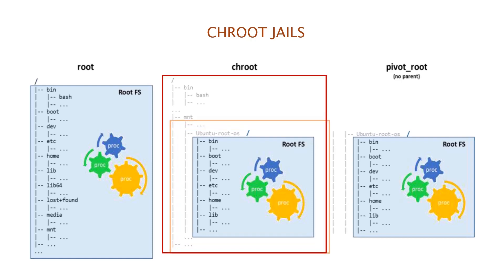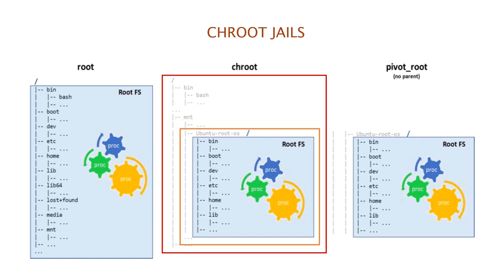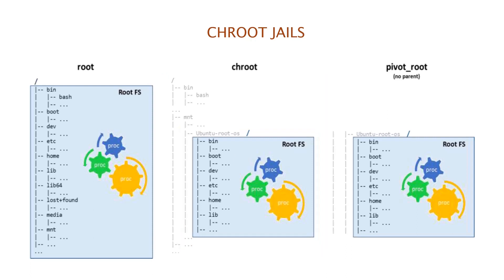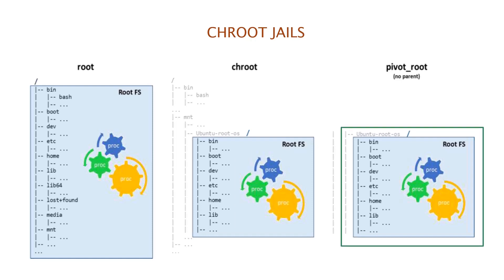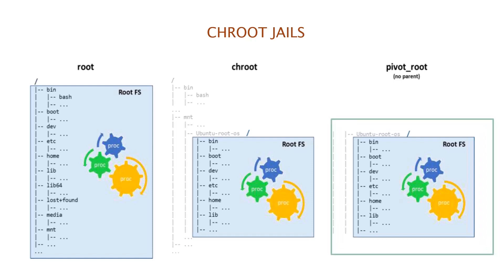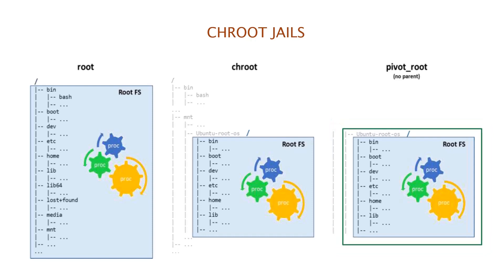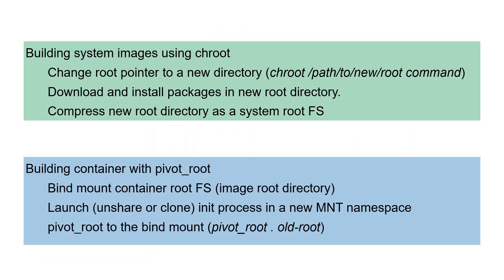The chroot system call creates a new process and points the process file system root to a new directory. In this example, you can notice that chroot points the root to the sub-directory Ubuntu root OS, but the new root is not detached from the actual root file system. Since it is just a root pointer change, a process can outsmart the chroot system call and escape the jail. Jails in Linux can also be created by using a more efficient system call, pivot_root. The pivot_root system call detaches the new root from the root file system and attaches it to the current process as the root directory. The pivot_root command with mount namespace addresses the escaping chroot concerns. In this example, you can notice that the new root directory Ubuntu root OS is completely detached from the actual root file system. Here you can see how the chroot system call is used to create a system image, and the pivot_root system call with mount namespaces is used to make the root file system of a container.